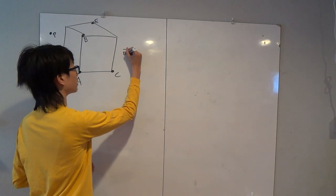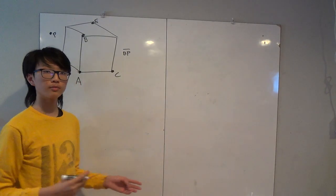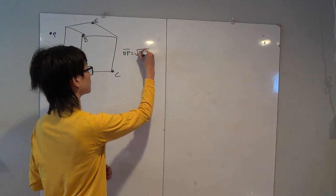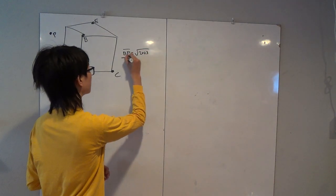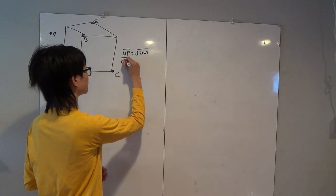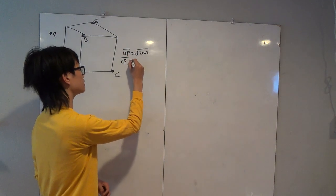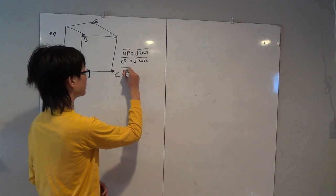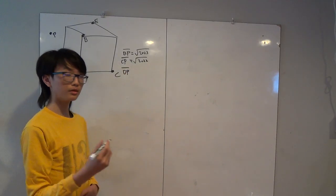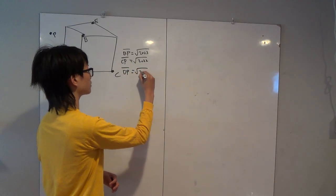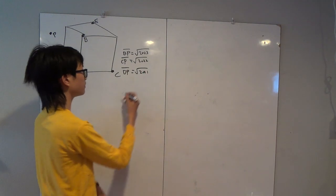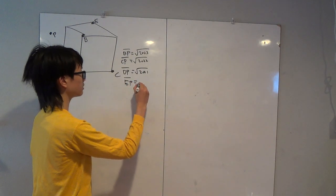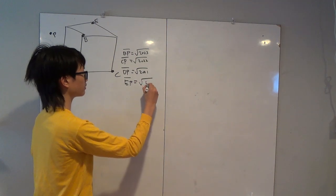The length of BP — the distance between point B and point P — is equal to the square root of 2023. The distance between point P and point C is equal to the square root of 2022. The distance between point D and point P is equal to the square root of 2021. And the distance between point E and point P is equal to the square root of 2020.